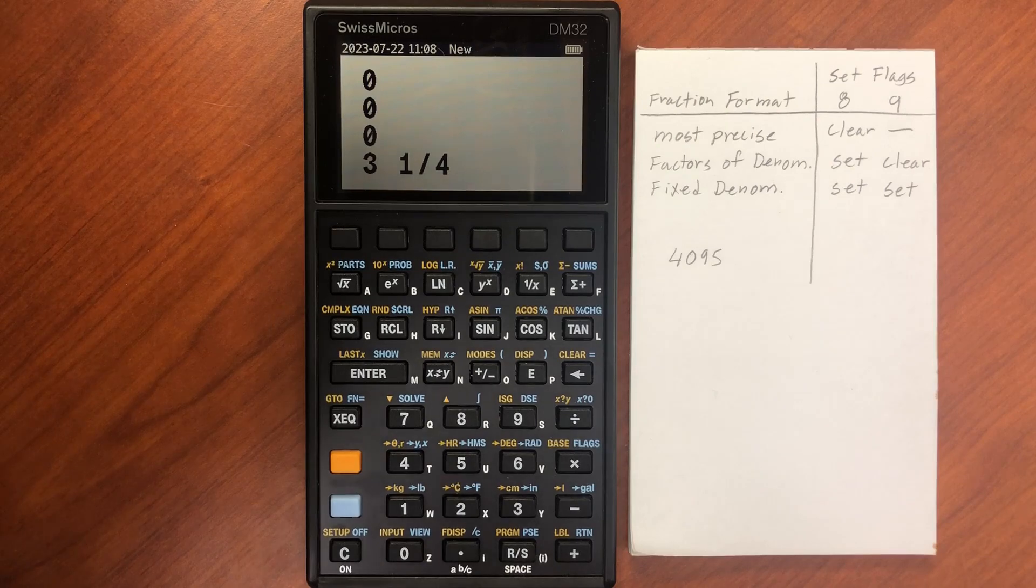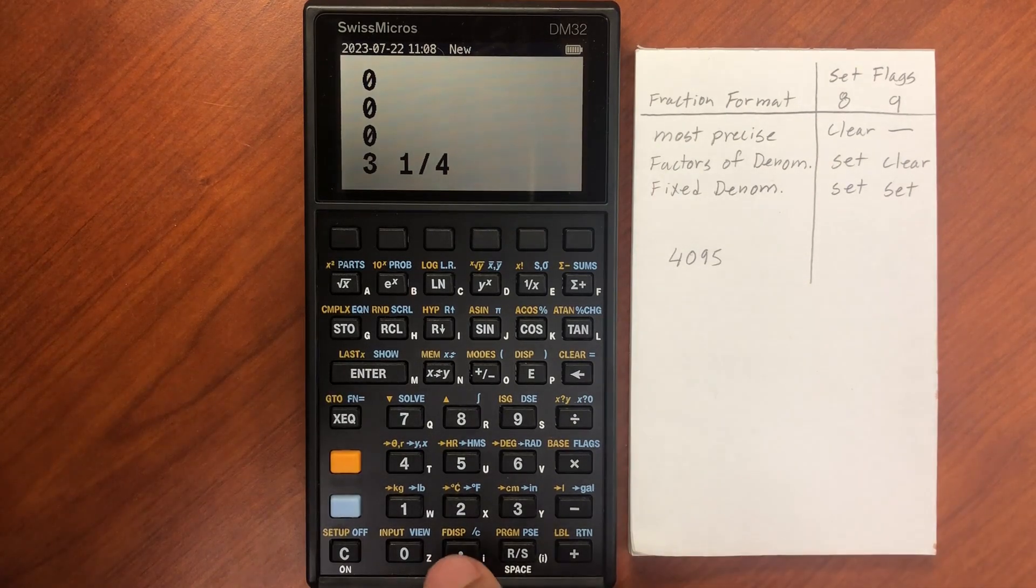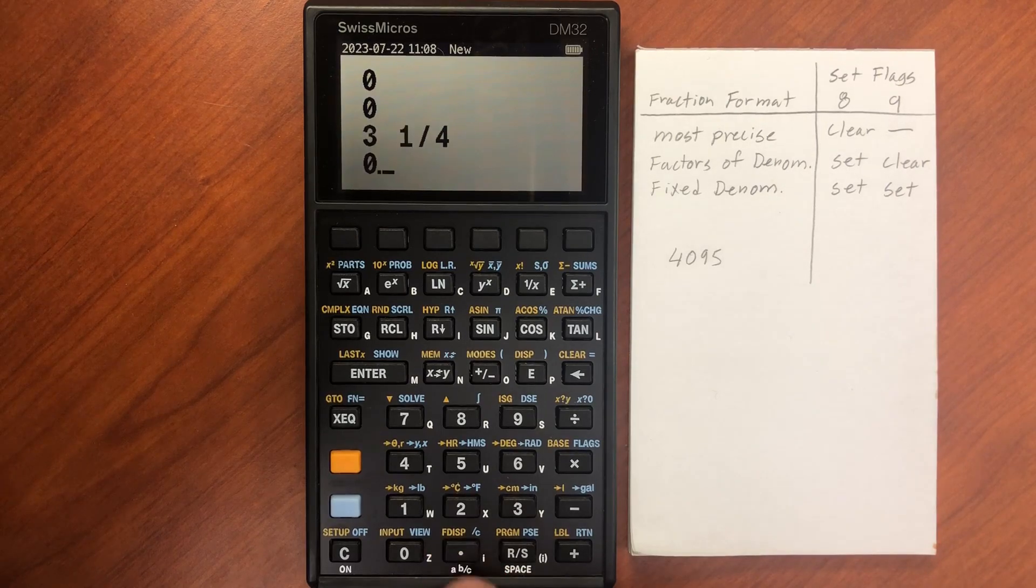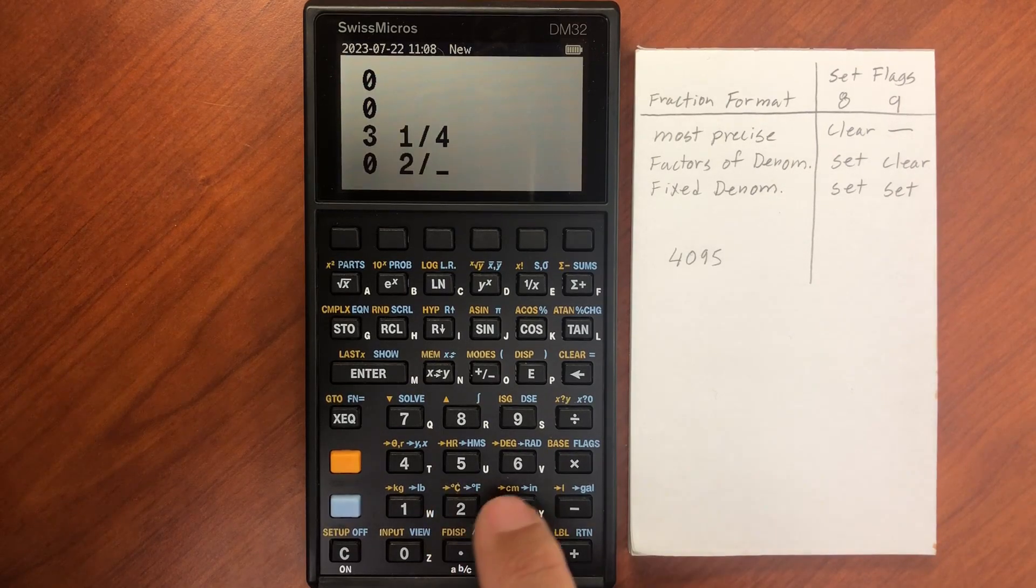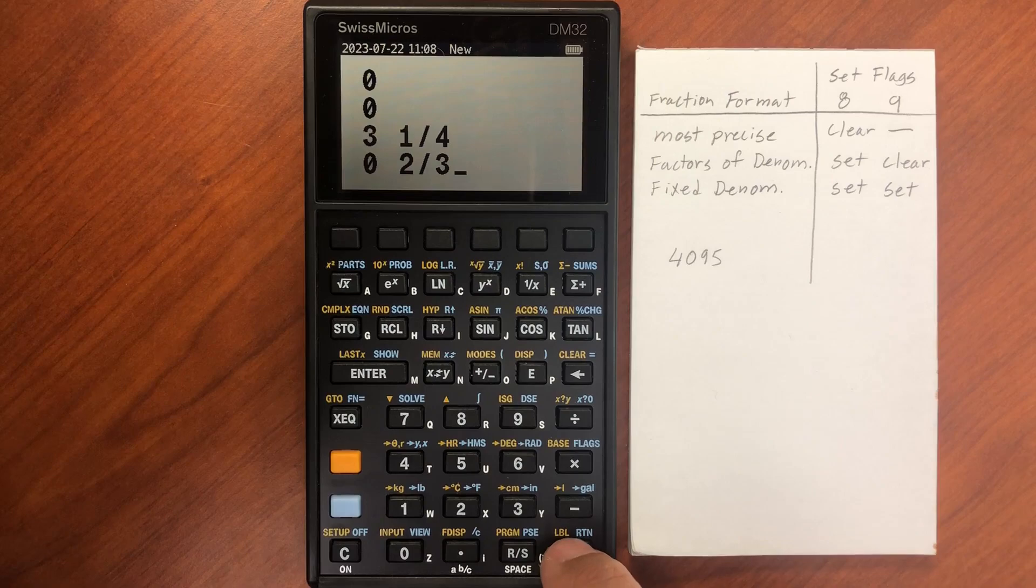If I want to add just a fraction with no integer portion, like, let's say, 2/3, I just do a leading decimal and then 2.3, and then I can add that.